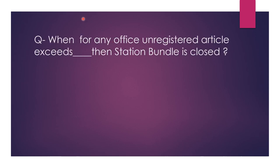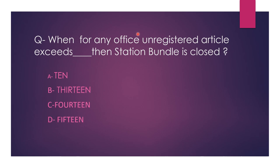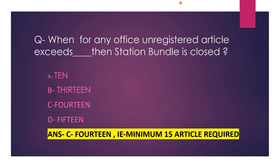Next question. When the number of unregistered articles for any office exceeds a certain threshold, a station bundle is closed. Options: A — 10; B — 13; C — 14; D — 15. The correct answer is option C, 14, meaning a minimum of 15 articles is required.